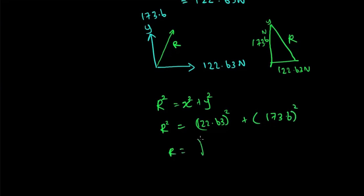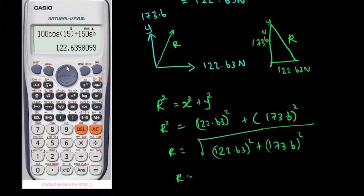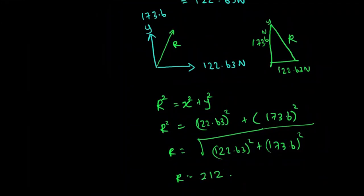R will be equal to the square root of X squared plus 173.6 squared. Let's take the answer for R: square root of 122.63 squared plus 173.6 squared, which is equal to 212.54 Newton. That means the resultant force of this system will be equal to 212.54 Newton.